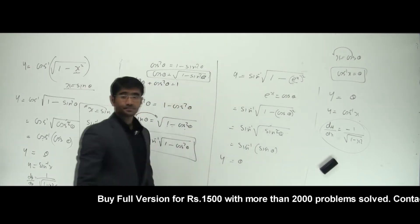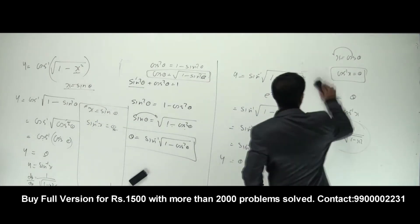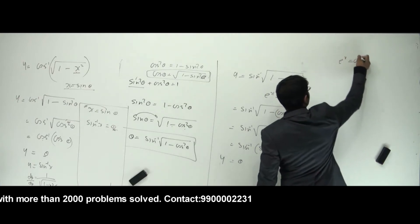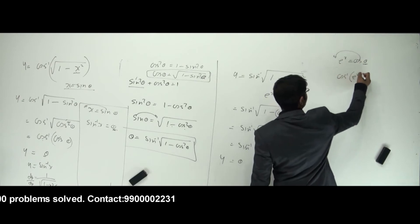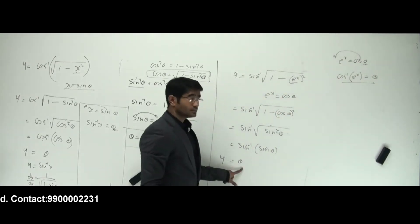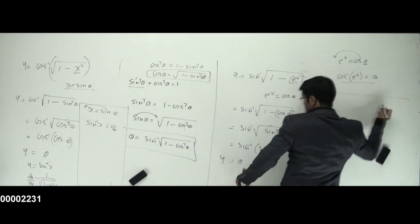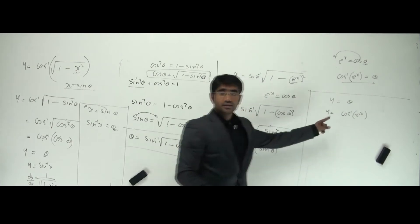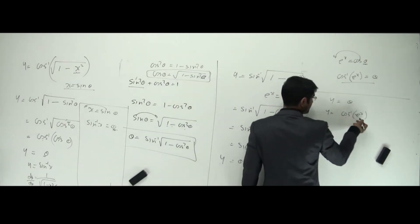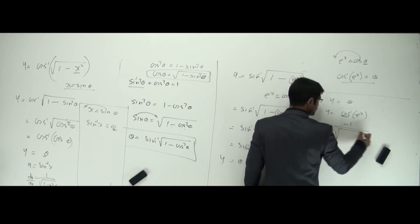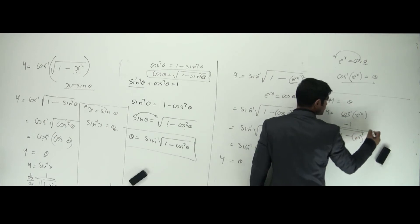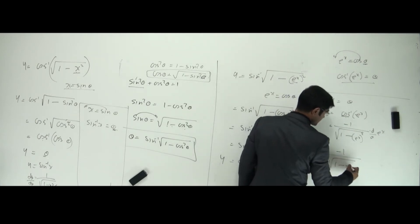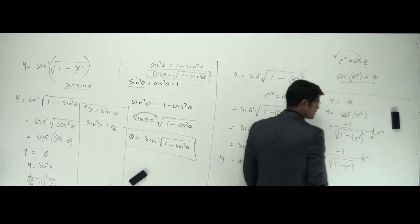Theta is back. Now who is theta? This time it's not cos inverse of x. I should find theta from the substitution I did. I took e^x as cos theta, so theta equals cos inverse of e^x. So y equals cos inverse of e^x. Differentiating using the chain rule: dy/dx equals minus one by root of one minus e^x whole squared, into d/dx of e^x, which is e^x. So dy/dx equals minus e^x by root of one minus e^(2x).